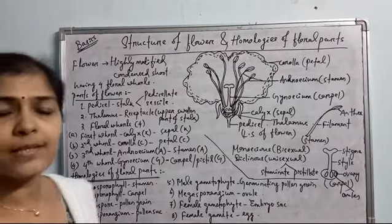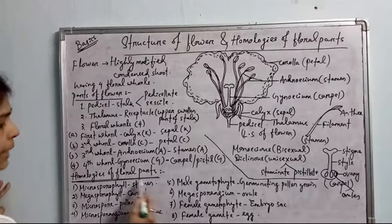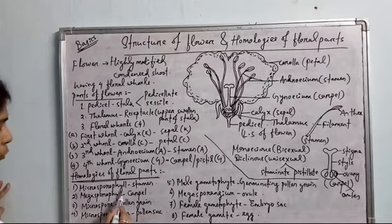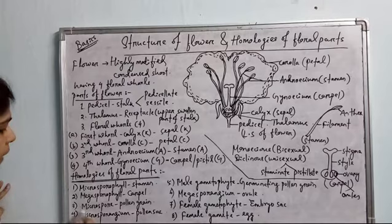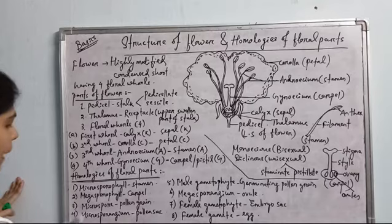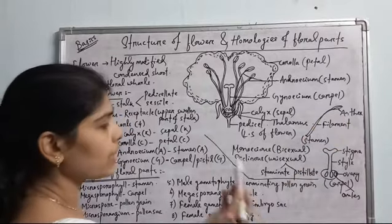Now let's come to the homologies of floral parts. These floral parts are scientifically termed as follows. Microsporophyll is the scientific term or homology for stamen. Similarly, carpel or pistil is known as megasporophyll because it bears the female gamete, while the stamen bears the male gamete. Microspore is the pollen grain, and microsporangium refers to the pollen sac — pollen grains are produced in pollen sacs present in the anther.